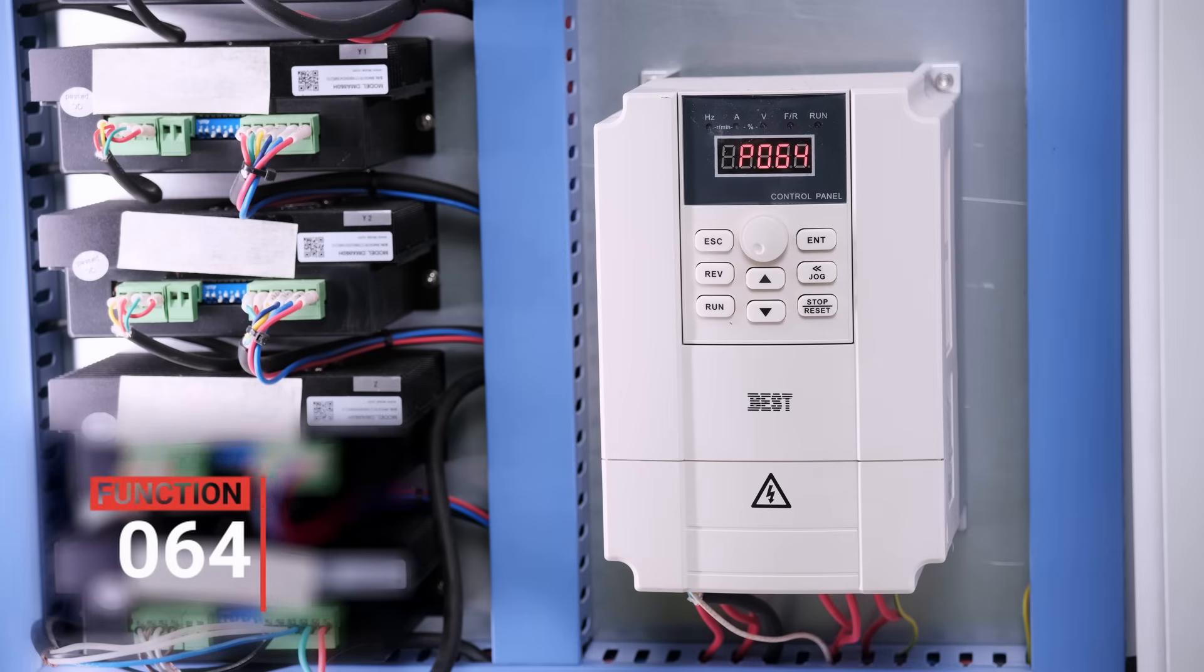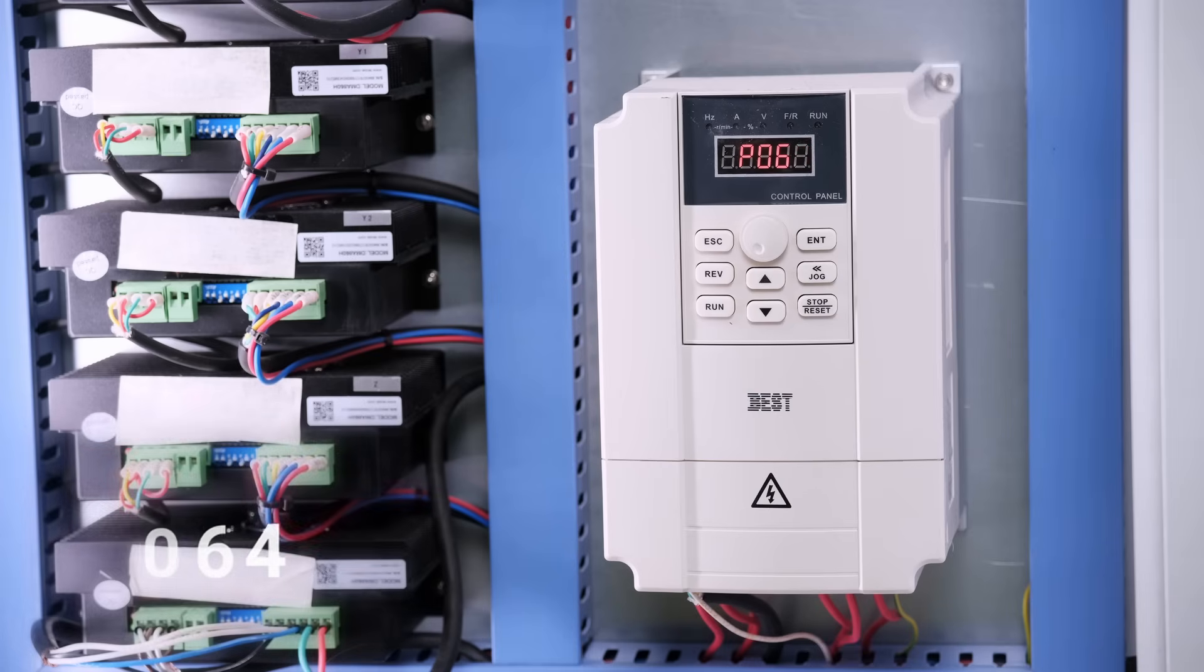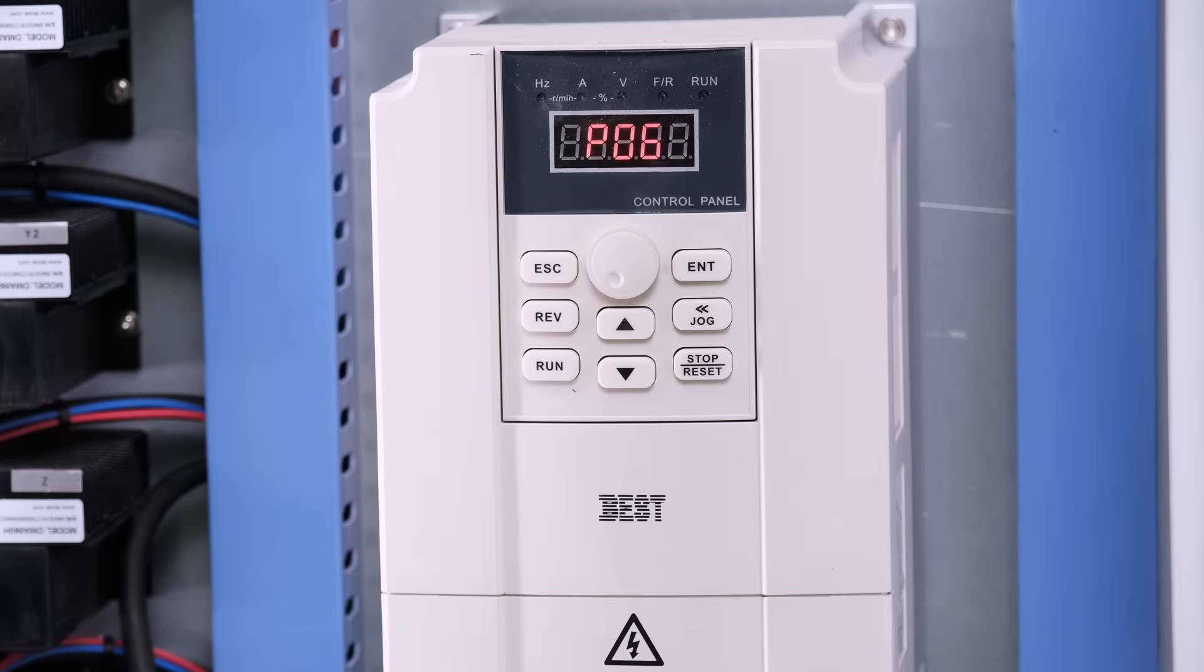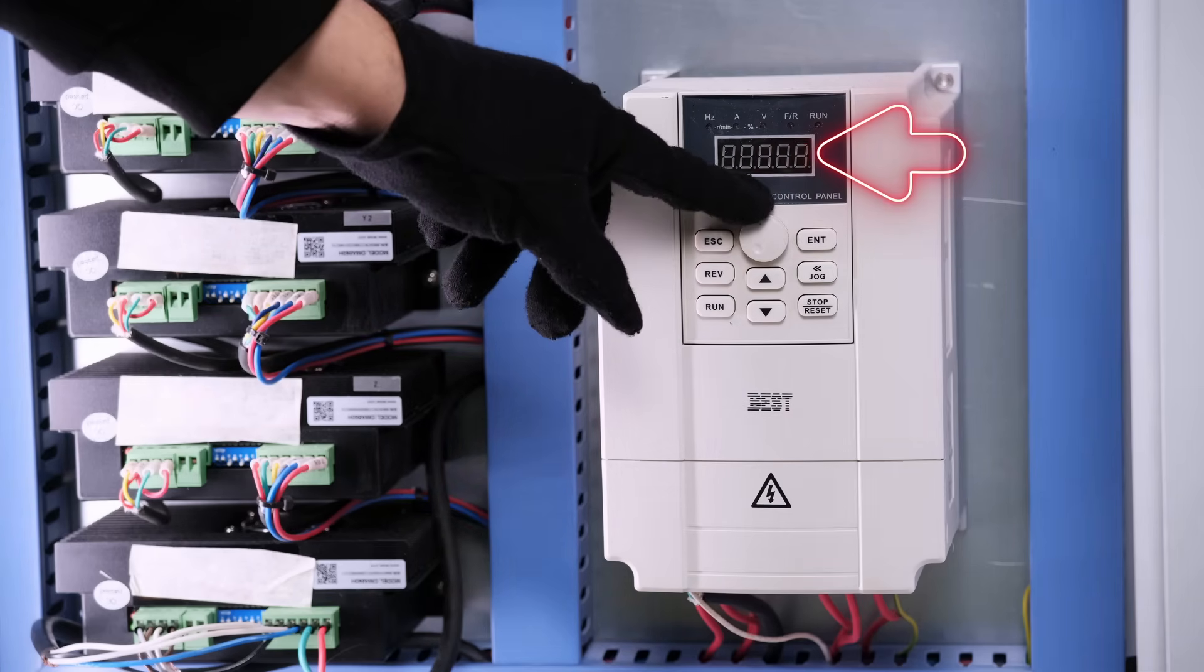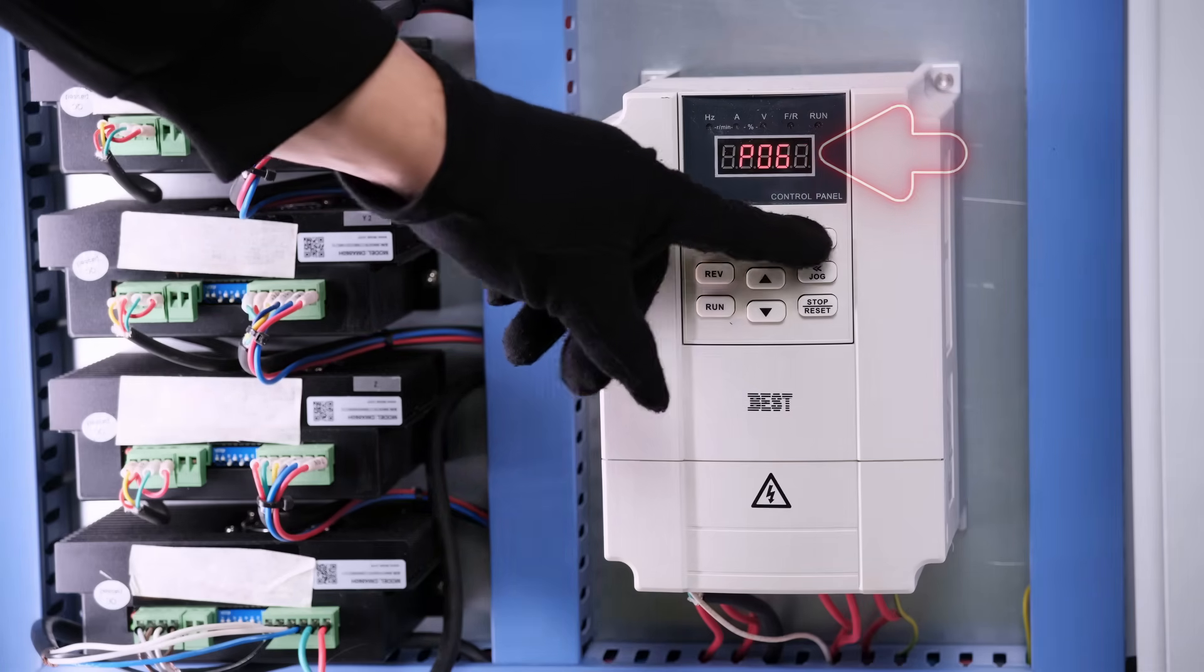Function 64. This point determines the source of frequency, in the meaning of where the frequency value is going to be taken from. You have to have a number 3 here. That will make the system work by predetermined speeds.